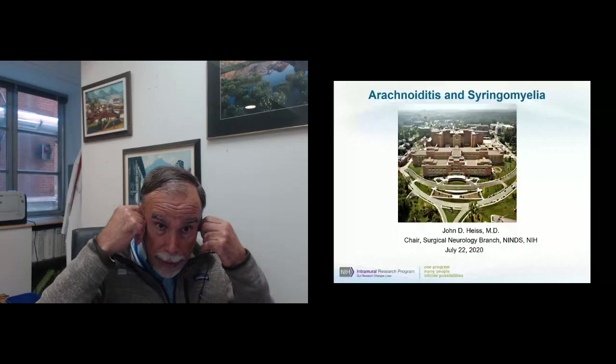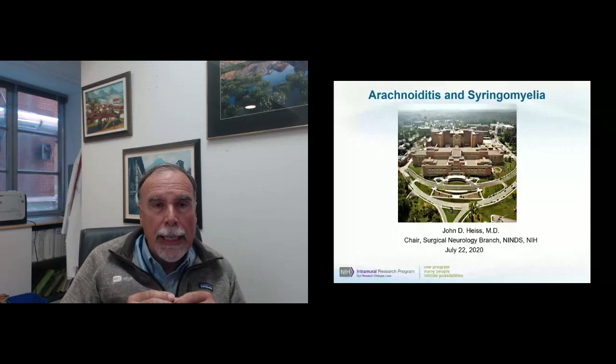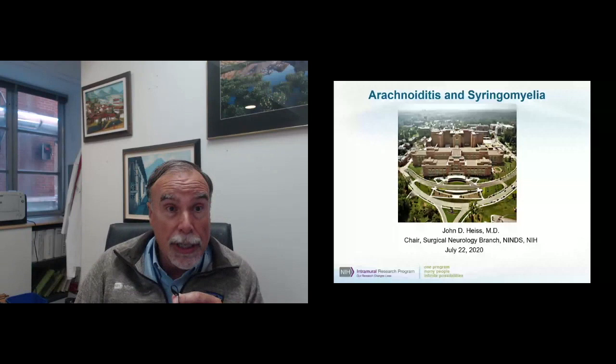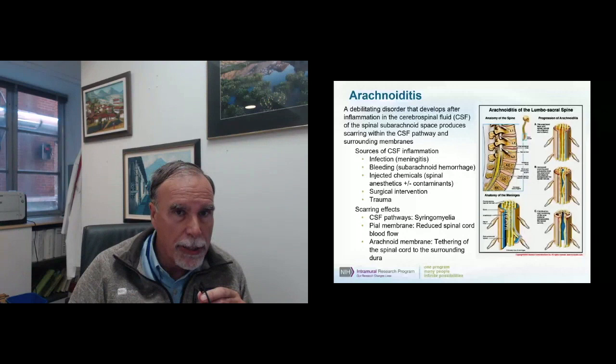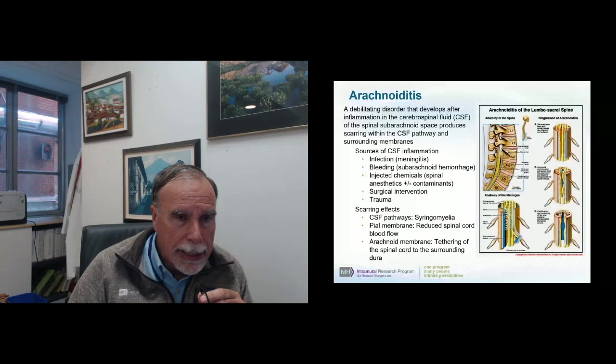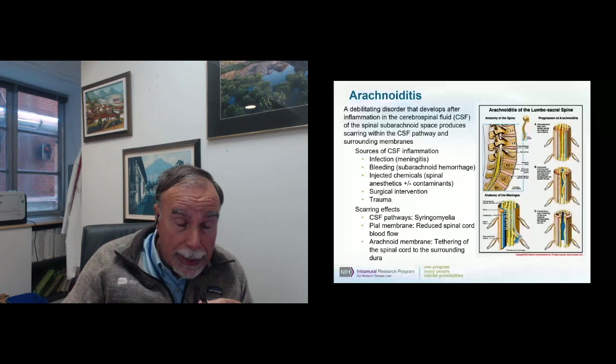Today I'd like to talk on arachnoiditis and syringomyelia. Arachnoiditis is a debilitating disorder that develops after inflammation in the cerebrospinal fluid. There are several sources for this condition: bleeding, injected chemicals — such as agents used in spinal anesthetics, though it doesn't happen very often — as well as agents used to clean the skin, surgical intervention, and trauma.